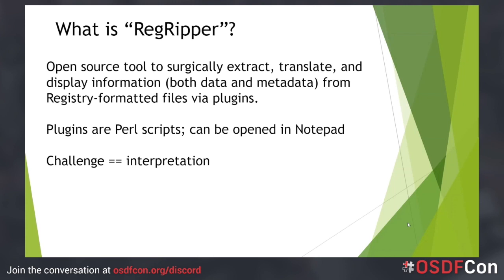The primary RegRipper tools — the GUI and command line interface tools — are also compiled into Windows executables. RegRipper is intended specifically to be used with offline files, such as those extracted using the regsave command, files extracted from an acquired image, or via some other means.